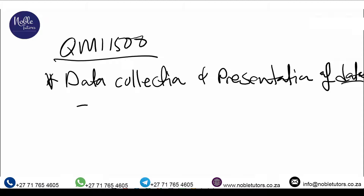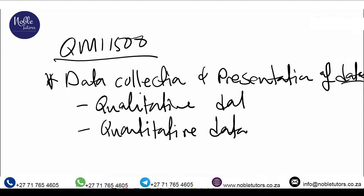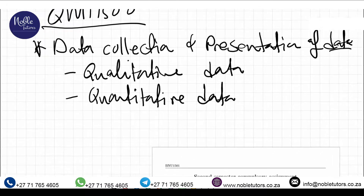For example, data is formed in two different aspects such as qualitative data and quantitative data. This topic focuses mainly on how we collect and present data, in which we can interpret that data to get useful information about it. So we'll be looking at the mathematical aspect of that.